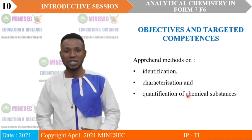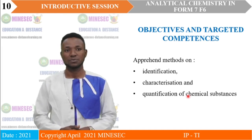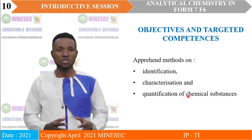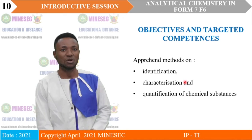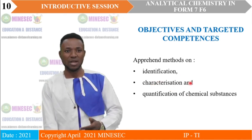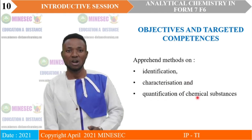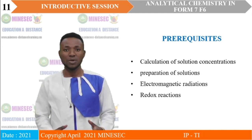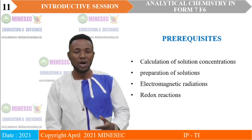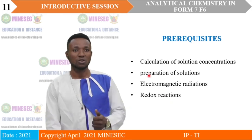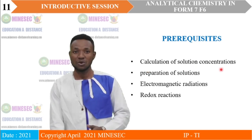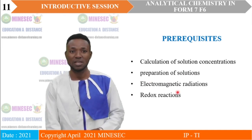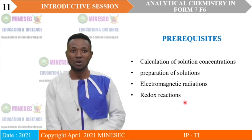What are the objectives and the targeted competencies? By the end of this syllabus, you should be able to apprehend the methods of identification, characterization, and quantification of chemical substances. The prerequisites for this program are: grounded knowledge on calculation of solution concentrations, preparation of solutions, electromagnetic radiations, and redox reactions.